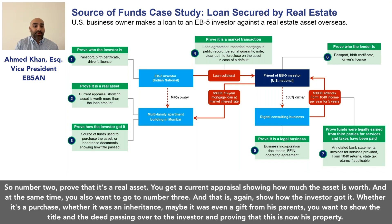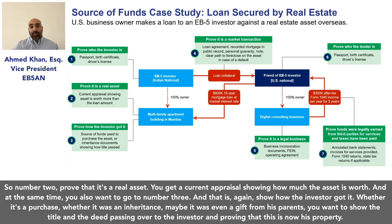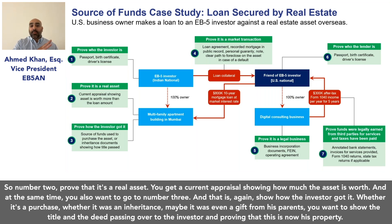Number two: prove that it's a real asset. You get a current appraisal showing how much the asset is worth. Number three: show how the investor acquired it — whether it's a purchase, an inheritance, or even a gift from his parents. You want to show the title and the deed passing over to the investor, proving that this is now his property.